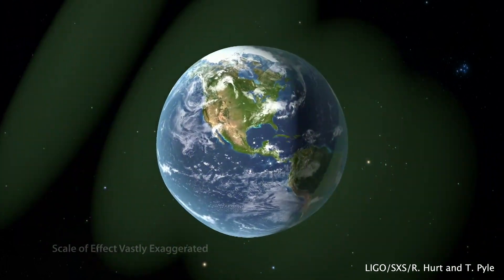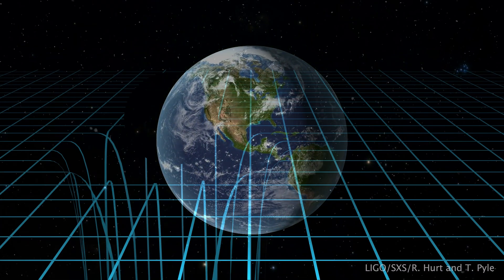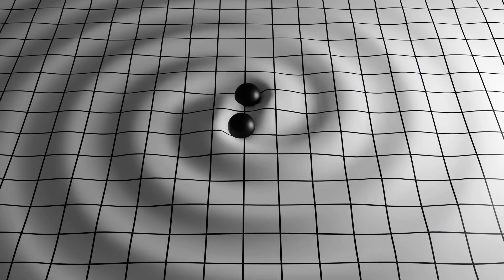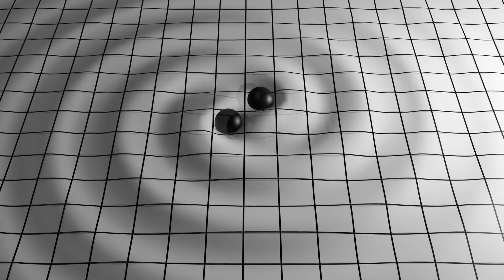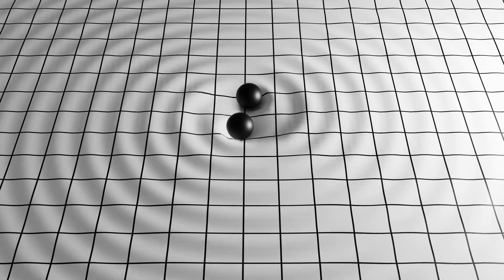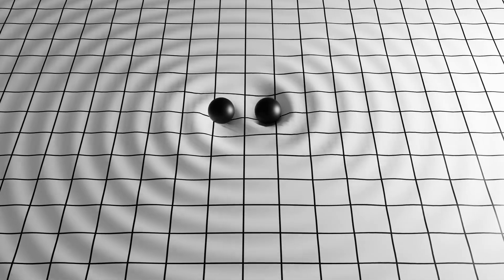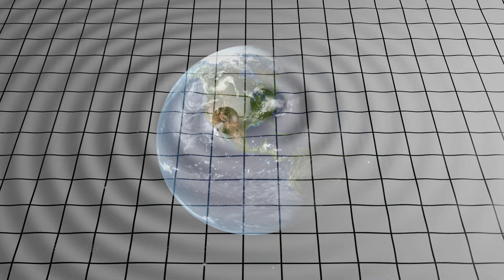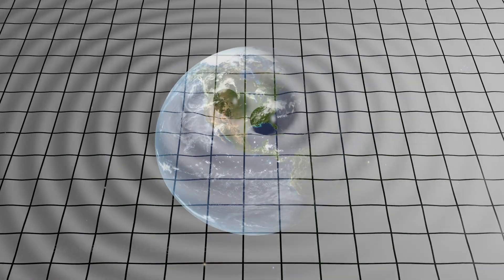Remember, the amount of stretching of spacetime is related to the mass of the objects in the binary system. And the frequency of the waves they produce is related to the orbital frequency of the binary. So by measuring the magnitude and frequency of these distortions, we can understand the binary systems that generated these gravitational waves. So how do we measure it?